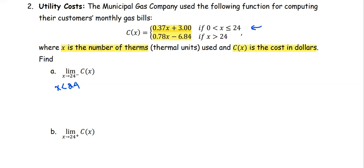So we can rewrite the limit as x approaches 24 from the left of the expression 0.37x plus 3.